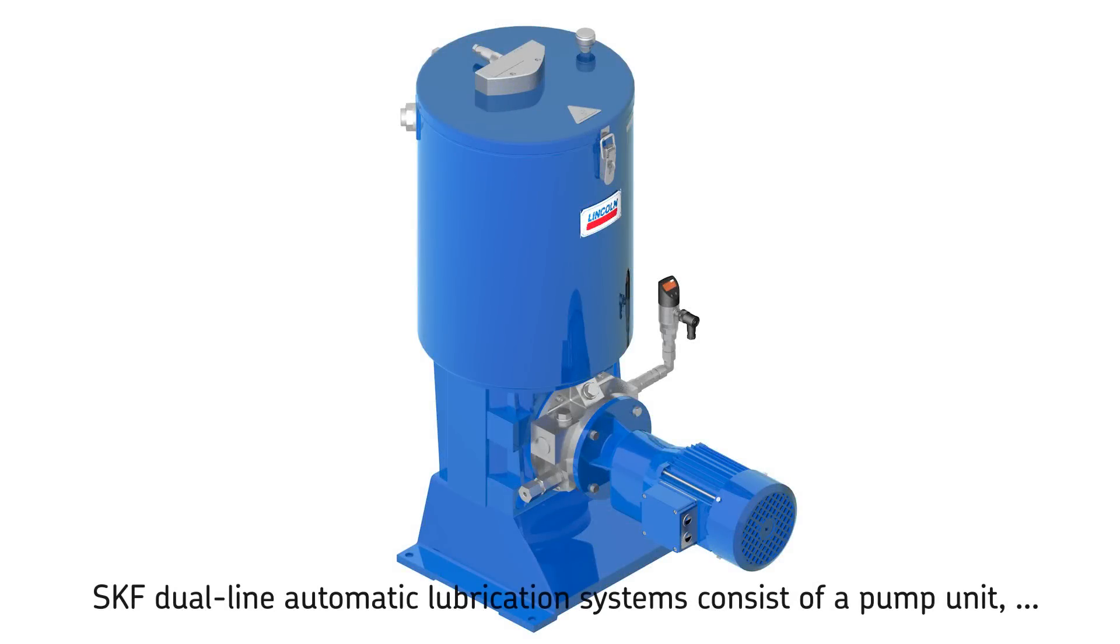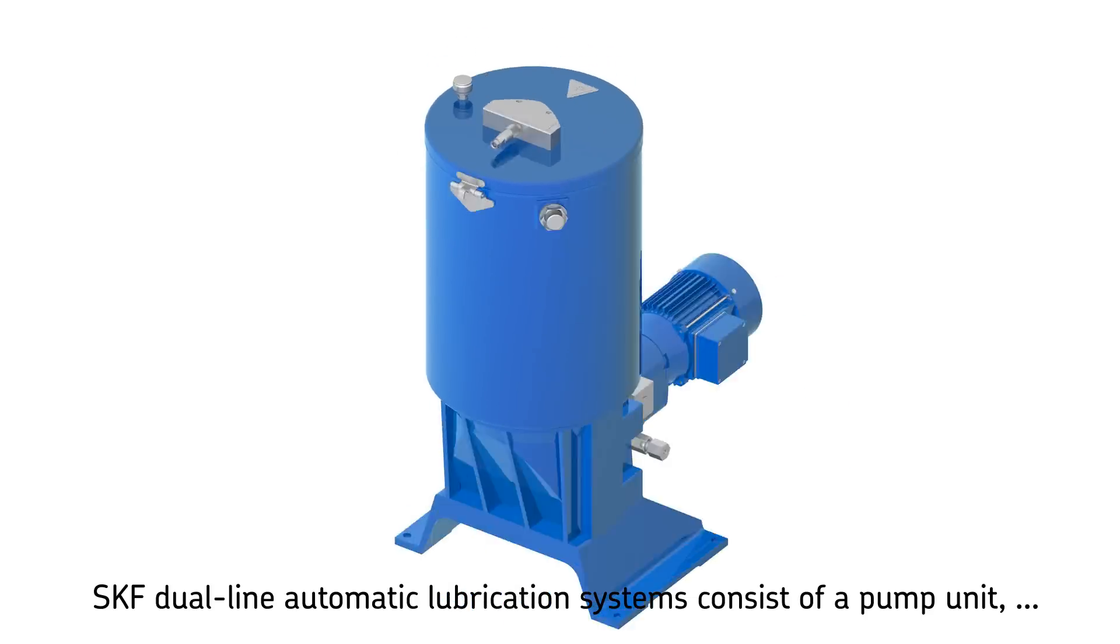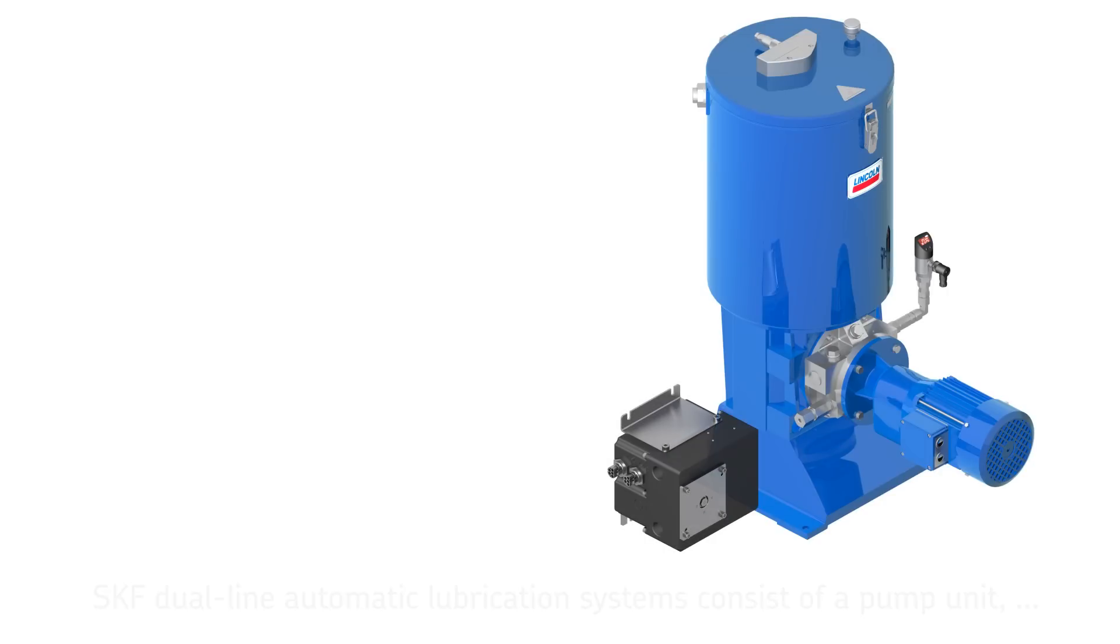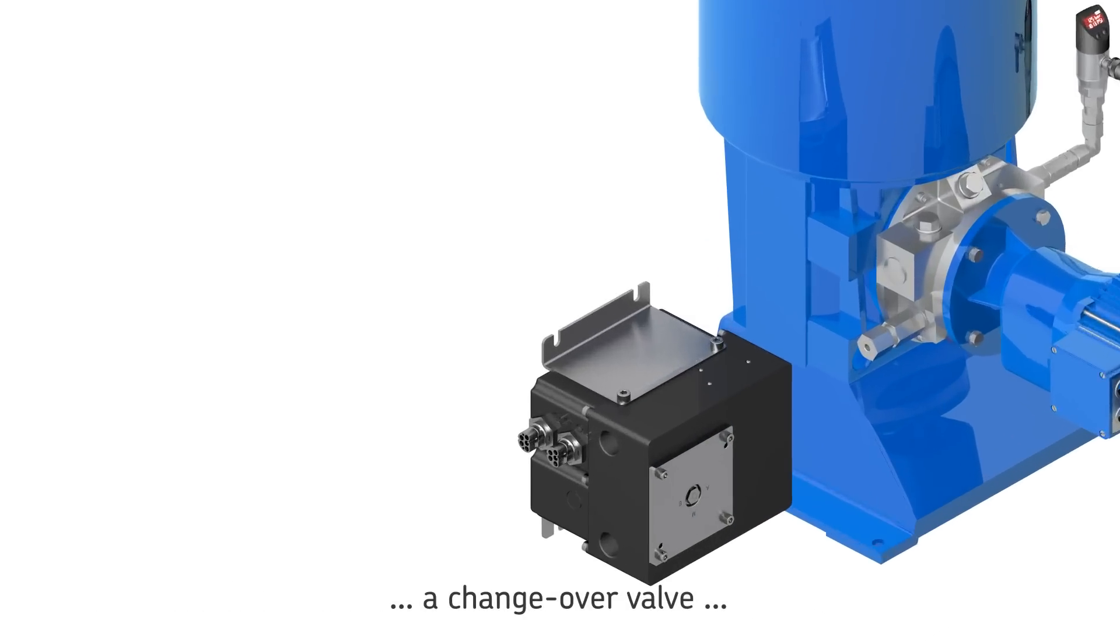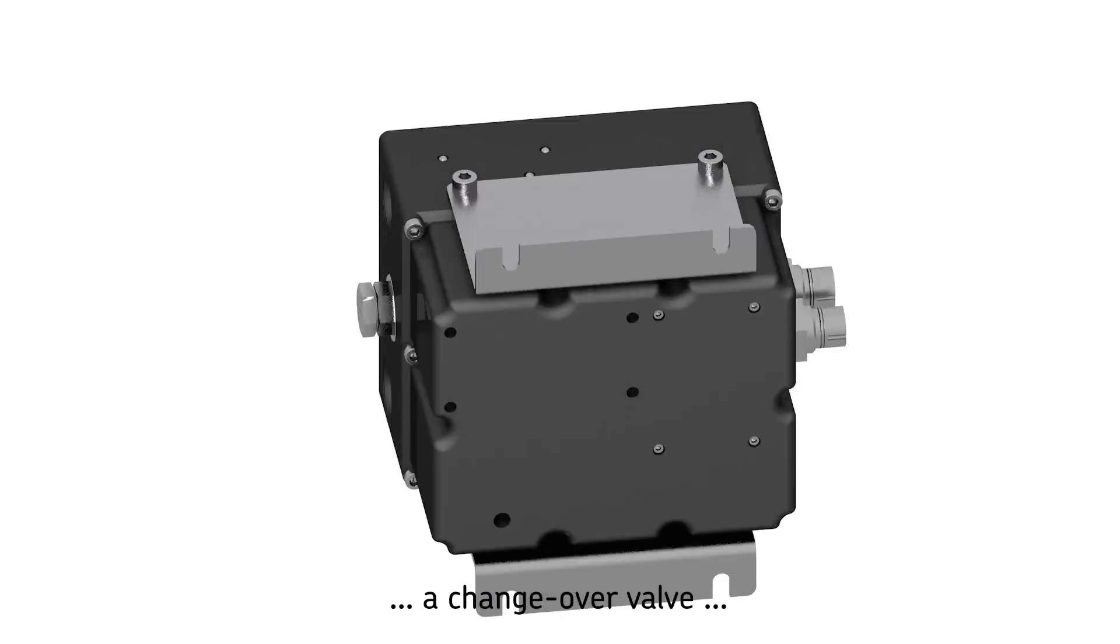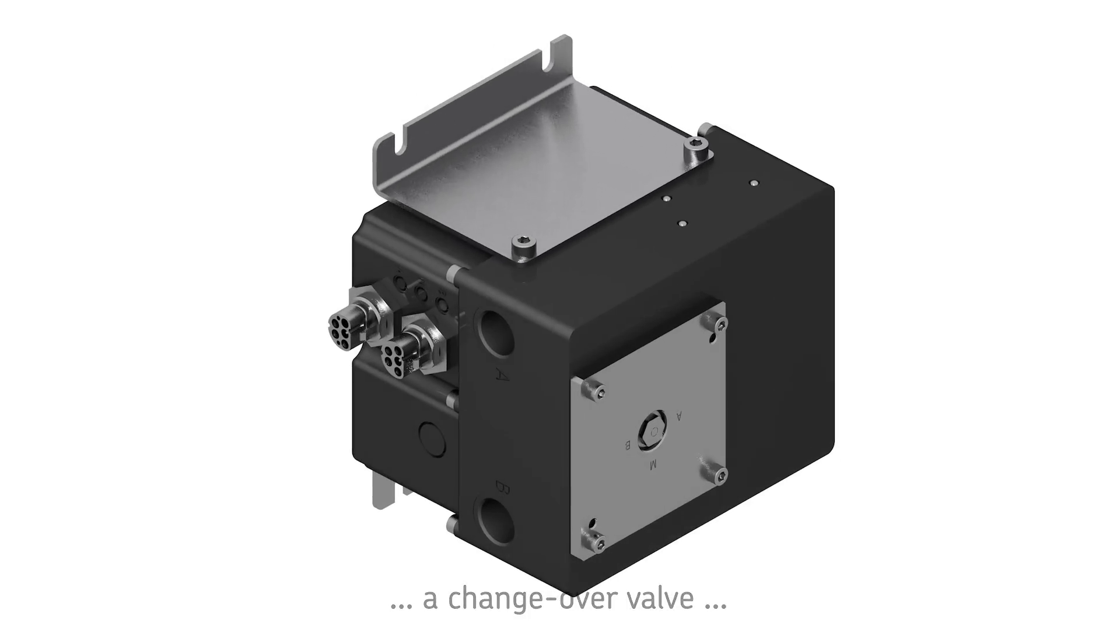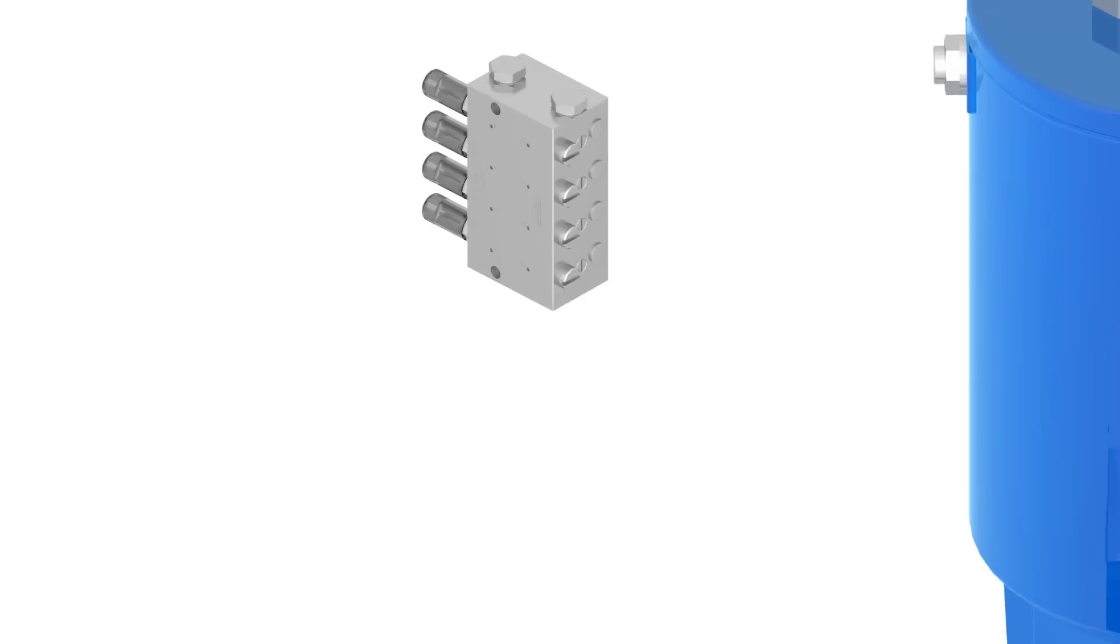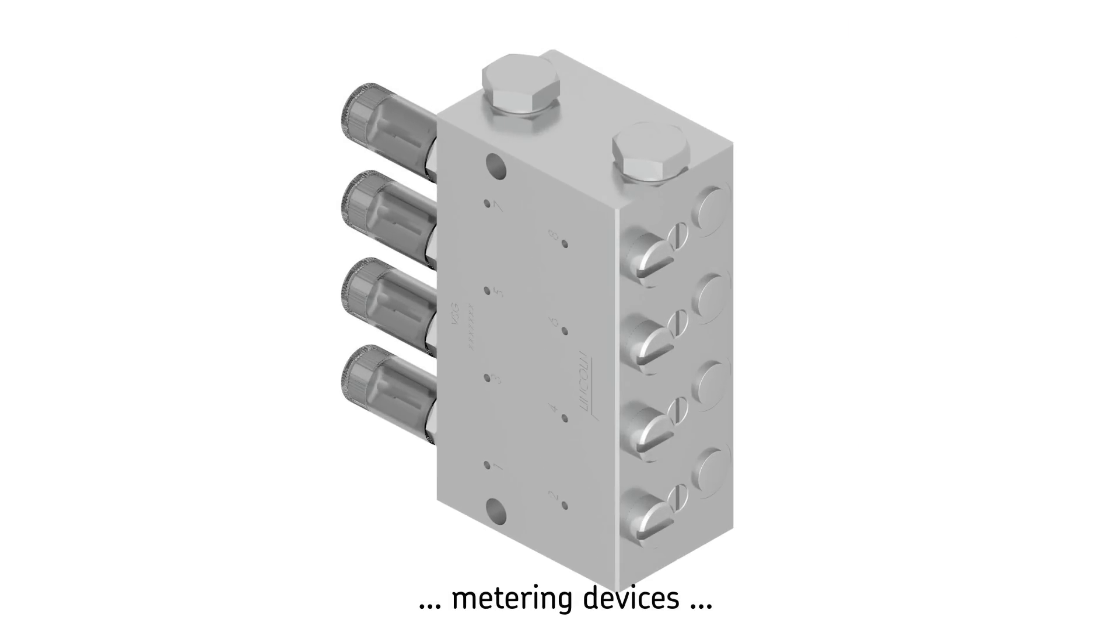SKF dual-line automatic lubrication systems consist of the following components: a pump unit that includes an analog or digital pressure gauge, such as the electrically operated ZPU24 or similar product, a changeover valve such as the EMU3, several dual-line metering devices that include piston sensors similar to the VSG.